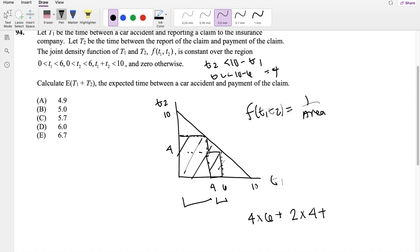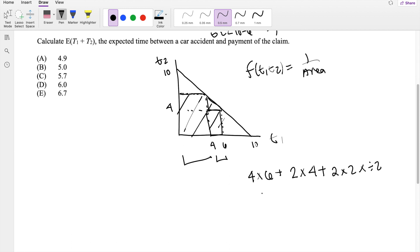And lastly, this right here is a triangle with base 2, height 2, but divided by 2, right, because it's a triangle. So then you basically get 24 plus 8 plus 2, which is equal to 34. So then f(t1, t2) must be equal to 1 over 34.